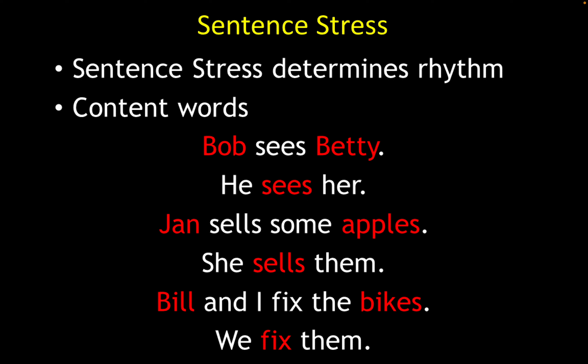Similarly, 'Jen sells some apples' — 'sells' and 'some' are unstressed and reduced. In 'she sells them,' 'she' and 'them' are unstressed and reduced: 'she sells 'em.' For 'Bill and I fix the bikes' — 'Bill' is a noun and 'I' is a pronoun, so we stress 'Bill.' The verb and article are unstressed; we stress the noun again: 'Bill and I fix the bikes.' Reduced: 'Bill 'n I fix the bikes.' And 'we fix 'em.'